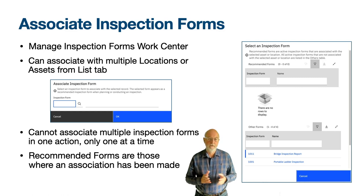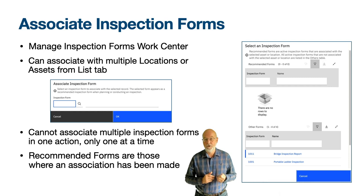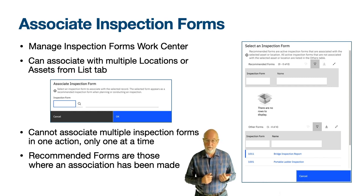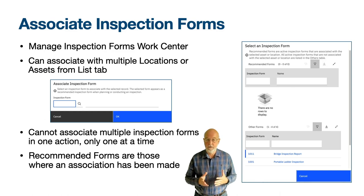The same dialog is available from a button called select inspection form in the create unscheduled inspection action in the location and assets applications. You can also toggle between recommended inspection forms and other forms when you are in the conduct an inspection work centre.